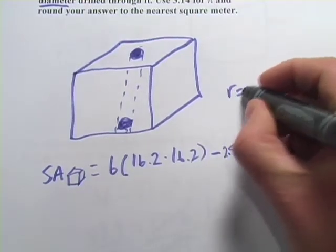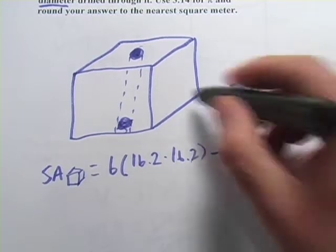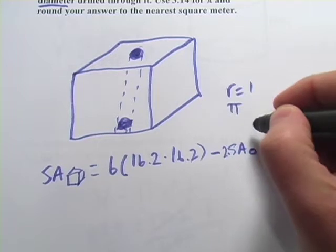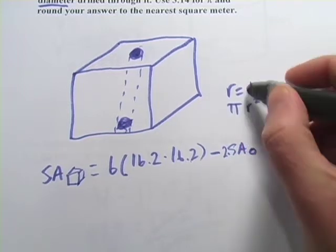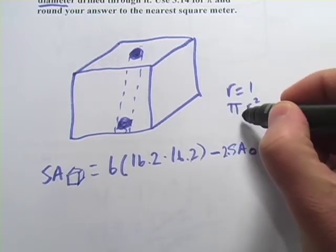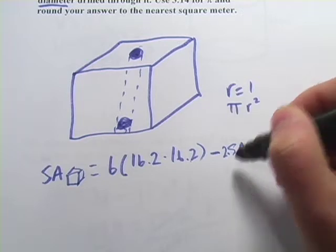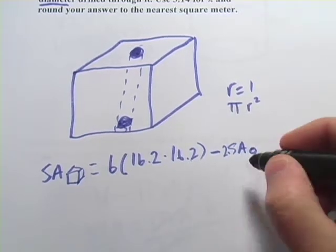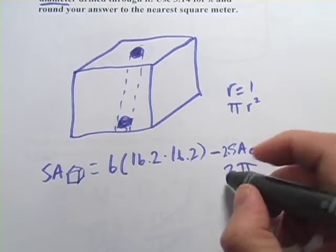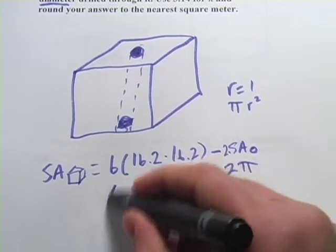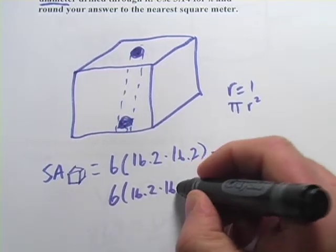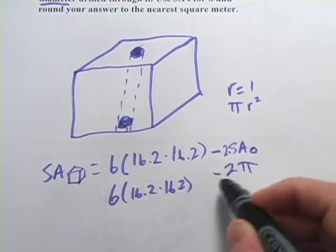That makes things a little bit easier. The area of the circle is pi r squared. So in this case, 1 squared is just 1. So the area of our circle is just going to be pi. So when we subtract the 2 times the surface area of the circle, it's really going to be 2 pi that we're subtracting. Alright. So we've got 6 times 16.2 times 16.2 minus 2 pi so far.